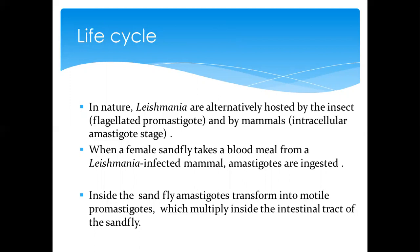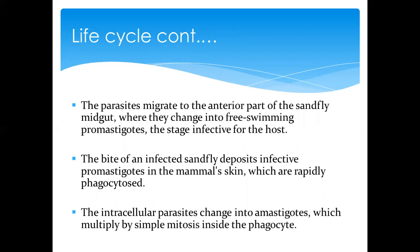When a female sandfly takes a blood meal from a Leishmania-infected host — mammal or person — what it takes up are amastigotes, because amastigotes are what circulate in the blood circulation of the host. Once inside the sandfly, amastigotes are transformed into promastigotes, so they must change morphology to penetrate the intestinal tract of the sandfly. Once they become promastigotes, they migrate to the midgut and continue migrating toward the mouth section of the sandfly.